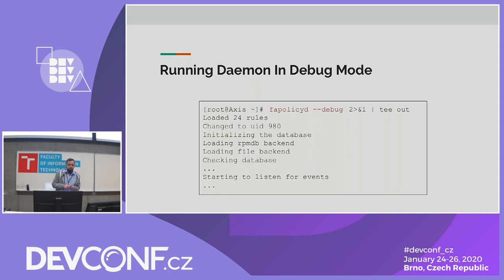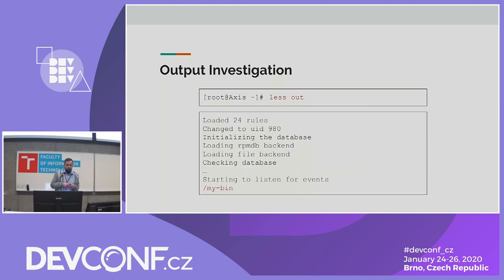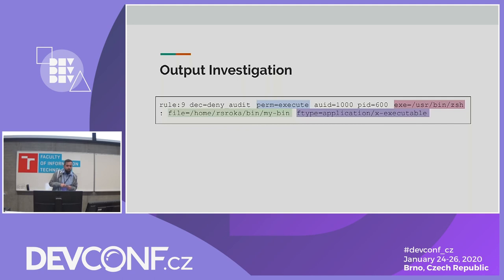I need to run the FAPOLICYD daemon in the background and save the command output. After that, if I try to run this binary, it is not possible to run it. We can investigate the output of the FAPOLICYD daemon by grepping for my binary — and we can see a line stating that there was an event about that binary and it was denied, specifically denied by rule number nine, which is the default rule that denies everything.